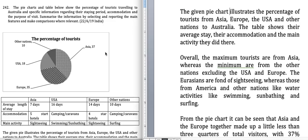This is the introduction in which I've talked about the main purpose — what the pie chart is telling and what the table is telling. Now the overview: the maximum tourists are from Asia, whereas the minimum are from the other nations.